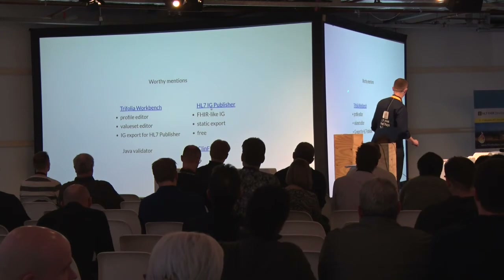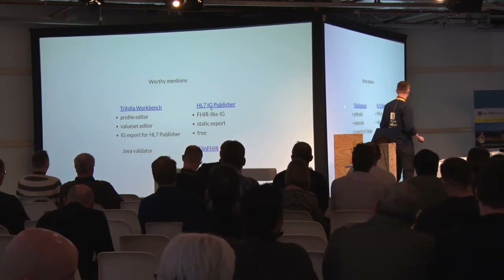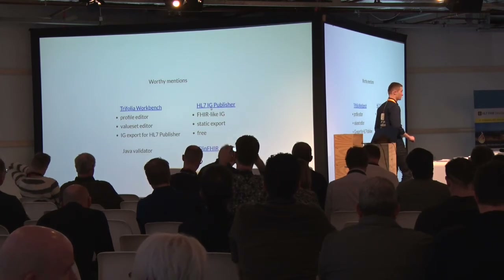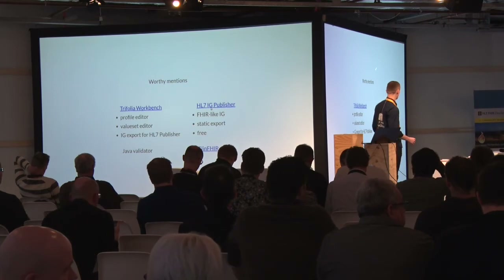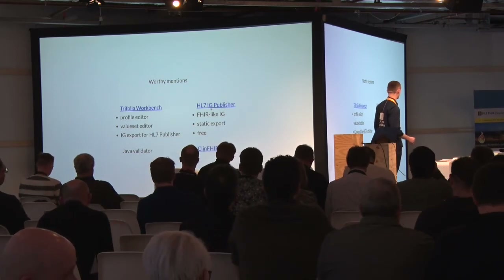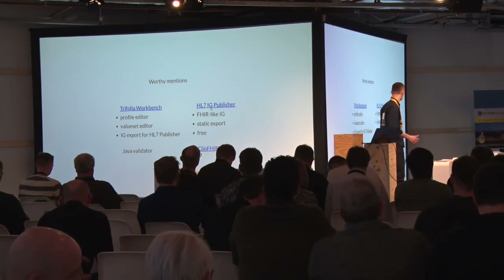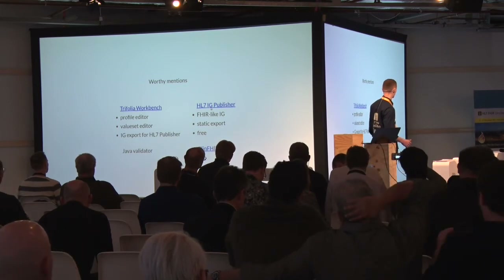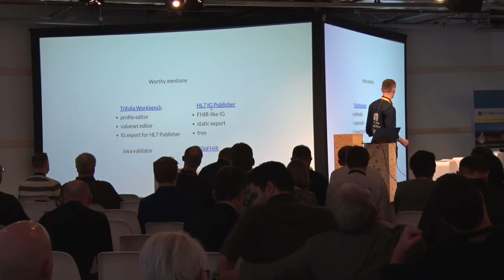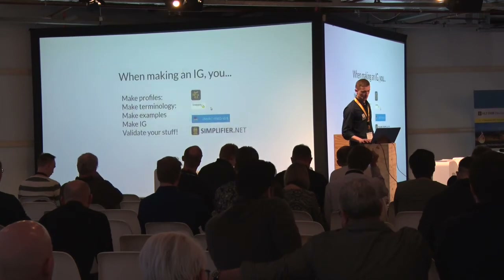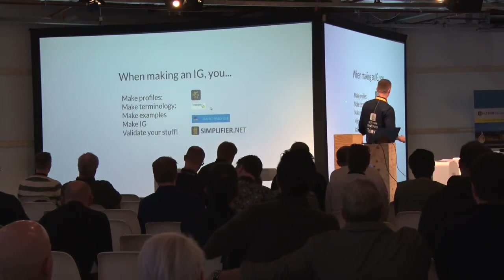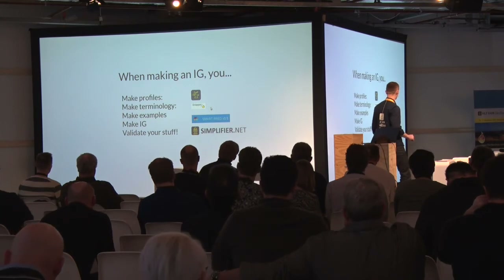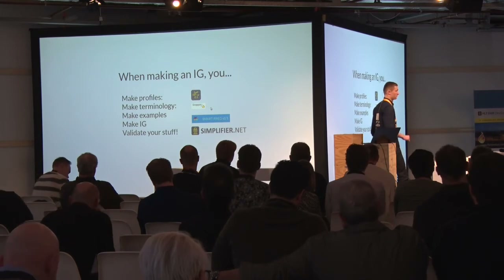Near the end of my talk, there are some notable mentions - tools that I don't work with personally but are very good. There is a Workbench, which has a FHIR profile editor online and an exporter for the IG Publisher. The IG Publisher allows you to create a FHIR specification itself with a nice static export. We also have Trifolia on FHIR, which is a Swiss Army knife with various tools. For validation, there is also a Java validator for that platform. So all in all, when making an IG: use Forge for your profiles, Snapper for your terminology, FRED to make your examples, and Simplifier to validate and pull all of your IG together. That is the best workflow.